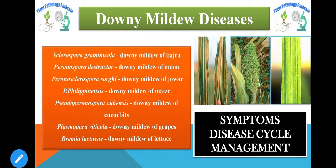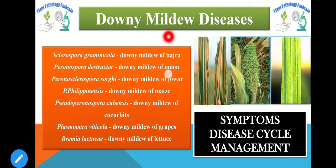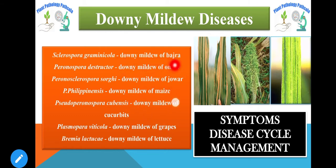In my previous video, we discussed about the family Peronosporaceae, included in the kingdom Chromista, and the pathogens included in that family causing Downy Mildew disease. We discussed its important characteristics and the six important genera included in Peronosporaceae which cause Downy Mildew disease in different economic crop plants.